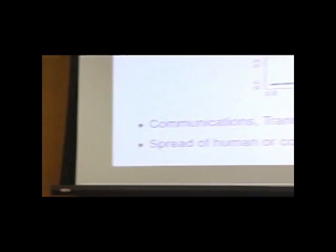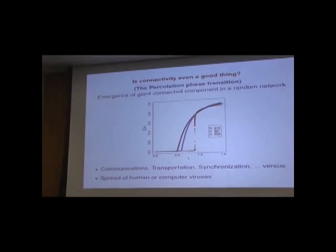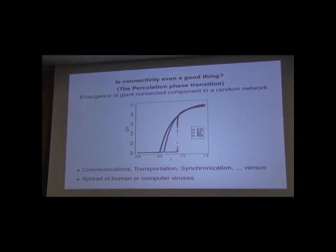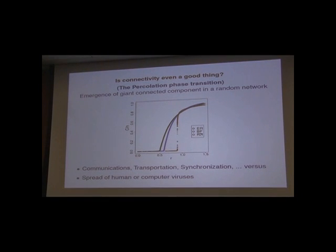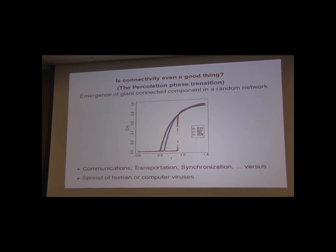This is one of the questions I've been asking with some of my colleagues: do we really want networks to be connected? Sometimes yes, sometimes no. If I'm building a transportation network or the internet, obviously I want all nodes to be able to communicate with all other nodes. But if I'm thinking about the spread of disease on human networks or computer networks, I want to break up the network so that things are contained and can't spread very quickly. So sometimes connectivity is great, and sometimes it's not.